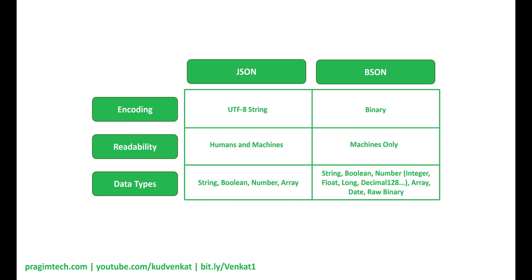You might be wondering: should I now learn this new binary BSON format? Well, no. As developers, we still use JSON format and MongoDB takes care of converting it to BSON and saving it on the disk. In your JSON documents, if required, use the additional data types provided by BSON — we don't have to worry about the internal BSON format. BSON is a binary representation of JSON and it contains more data types than JSON, so you can think of BSON as a superset of JSON.